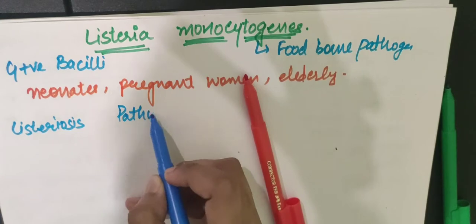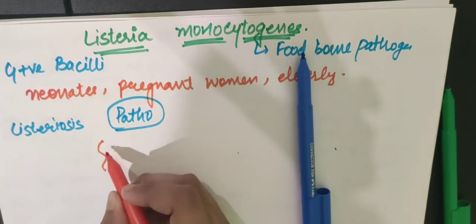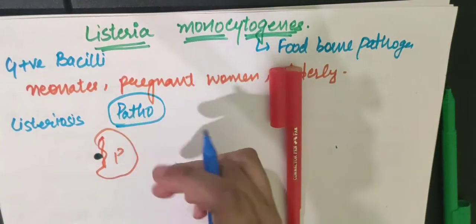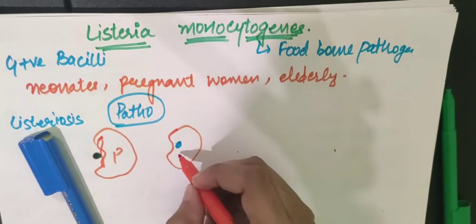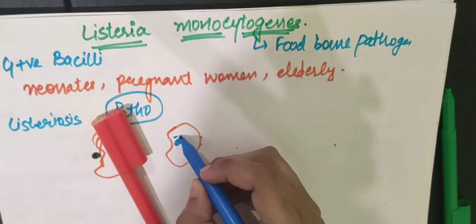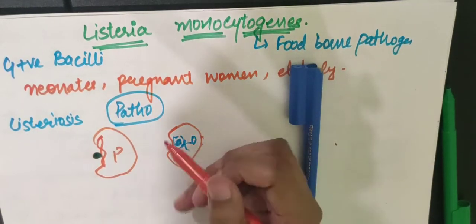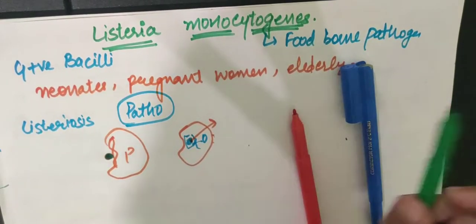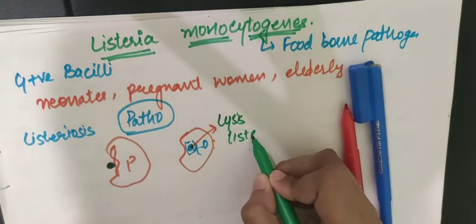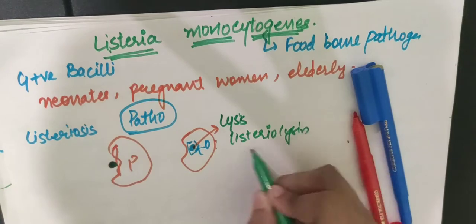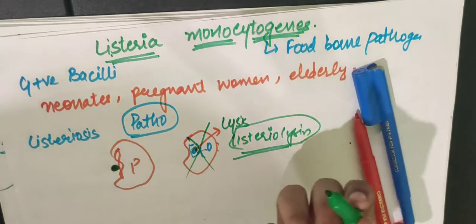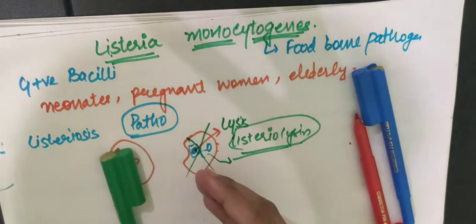In pathogenesis, the bacteria enters a phagocyte. Normally, the phagosome and lysosome would destroy it, but Listeria is very cunning. It uses listeriolysin — a toxin — to lyse the phagosome, escape destruction, and then spread directly from cell to cell.